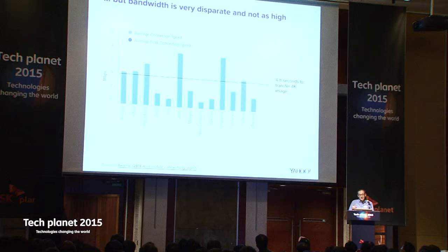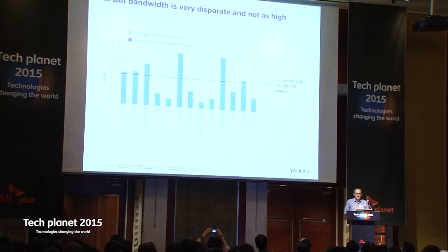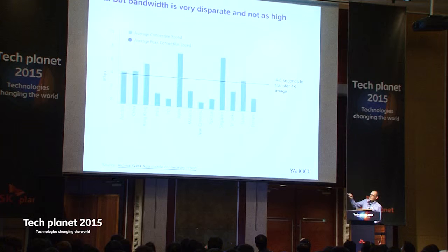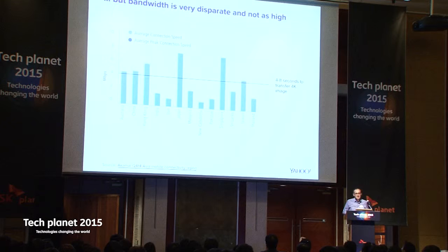One thing that is not getting significantly better is network bandwidth. The average connection speed in Asia at the end of last year was roughly 4 megabits per second — even though in some places it's much lower. At 4 megabits per second, it takes 4 to 8 seconds to transmit a 4K image. So there are a lot of challenges to solve here.